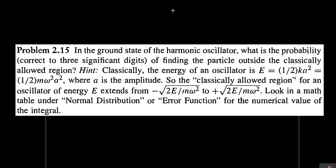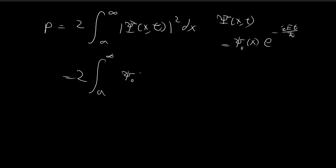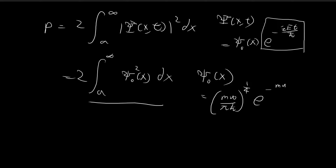We're dealing with the ground state of the harmonic oscillator, so the wave function is equal to xi-zero (the spatial part) times the time component. When you take the conjugate and multiply, the time components cancel, and you're left with xi-zero squared dx. Recall that xi-zero equals (m omega divided by pi h-bar) to the power of one-fourth, times e to the power of negative m omega over 2 h-bar times x squared.